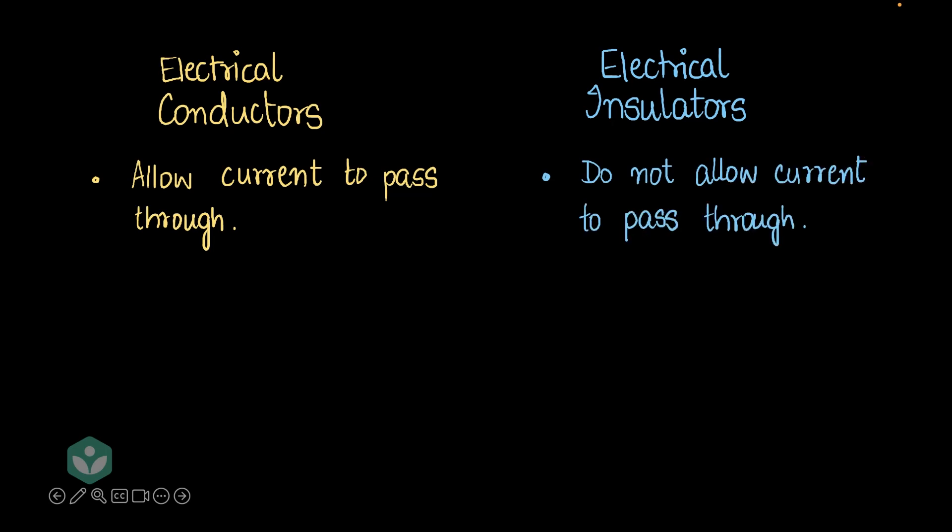Now, how do we test if a particular object is a conductor or an insulator? Let's do a simple test. So let's say I have a cell and I connect the cell to a lamp through some wires, but I leave a small gap here between these two wires. Do you think if I left a gap like this, this bulb would light up? Of course not. Electric current would not be able to pass through the wire because there's a break in the circuit. The circuit is not completed because electric current cannot pass through air.